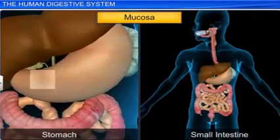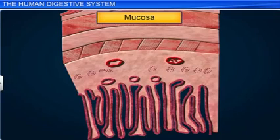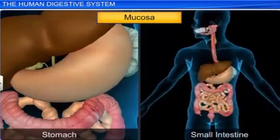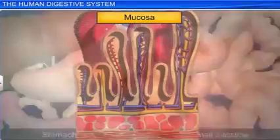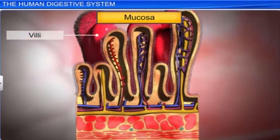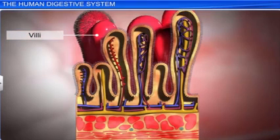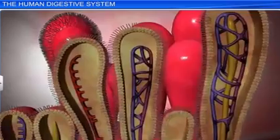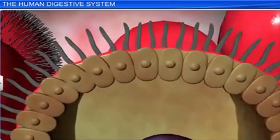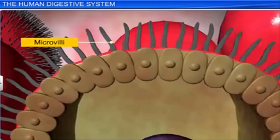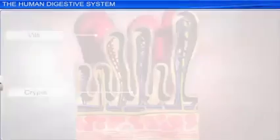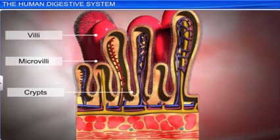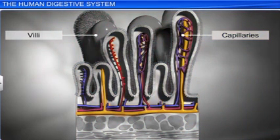In the stomach, mucosa forms gastric glands and irregular folds called rugae. Whereas in the small intestine, mucosa forms villi — small finger-like projections. The mucosa also forms crypts called the crypts of Lieberkühn between the bases of the villi. The borders of the villi have a brush-like appearance, as the cells lining the villi produce several microscopic projections called microvilli. Both villi and microvilli considerably increase the absorptive surface area of the small intestine. Villi also have a network of capillaries and a large lymph vessel called the lacteal.